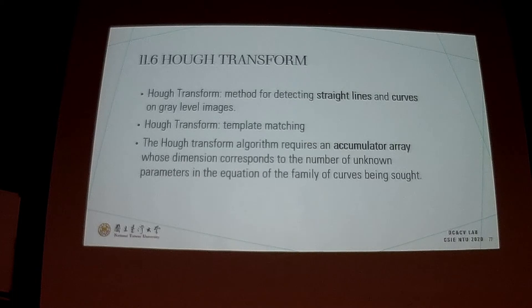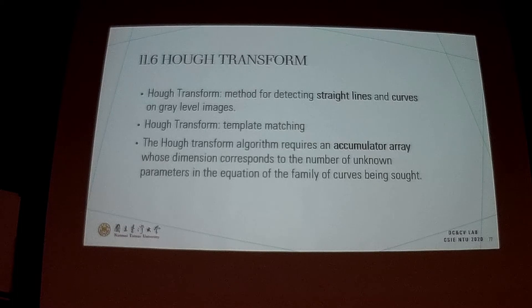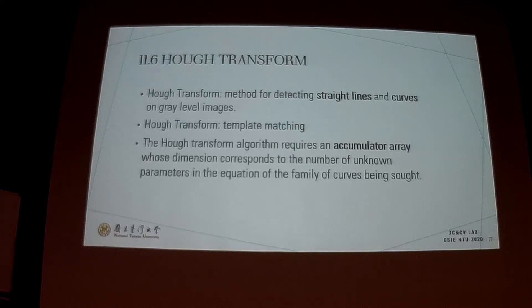The next part is about the Hough transform. The Hough transform is a method for detecting straight lines and curves on a gray-level image. Basically the Hough transform is a template matching technique, and it requires an accumulator array whose dimension corresponds to the number of unknown parameters in the equation of the family of curves being sought.